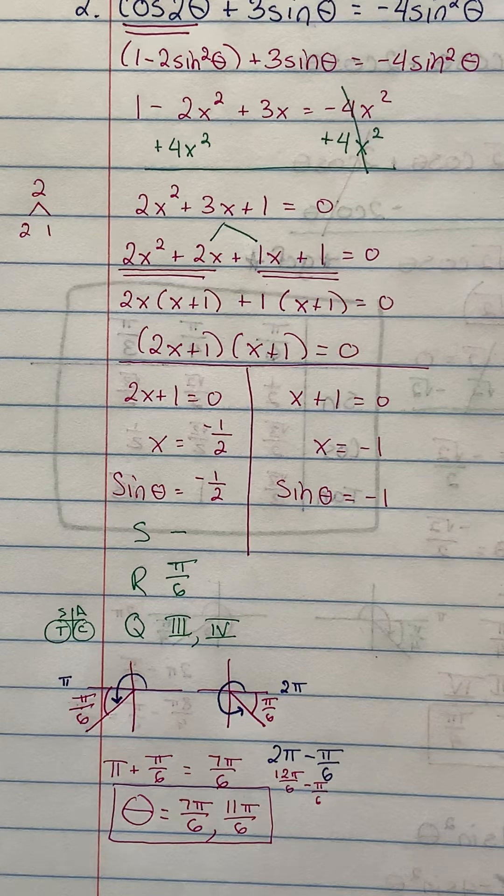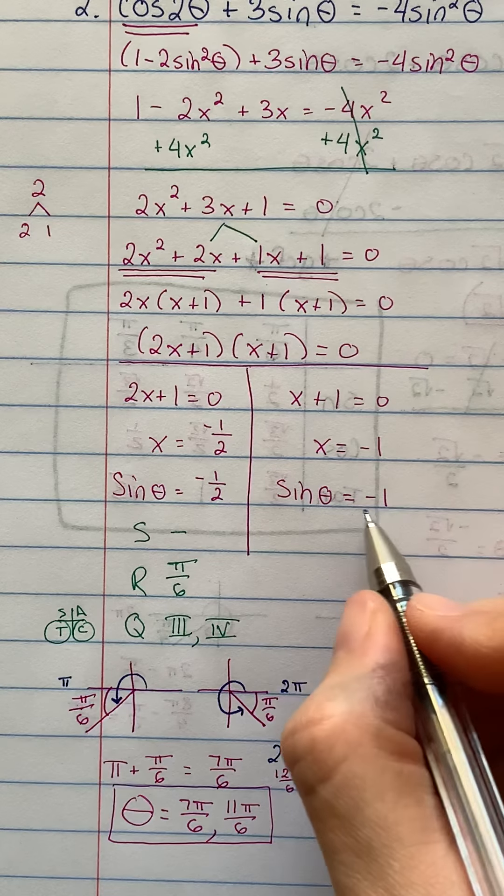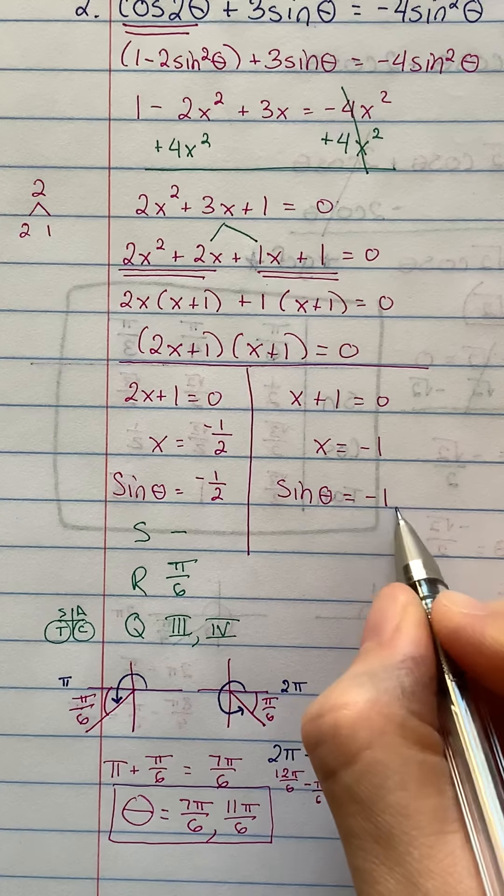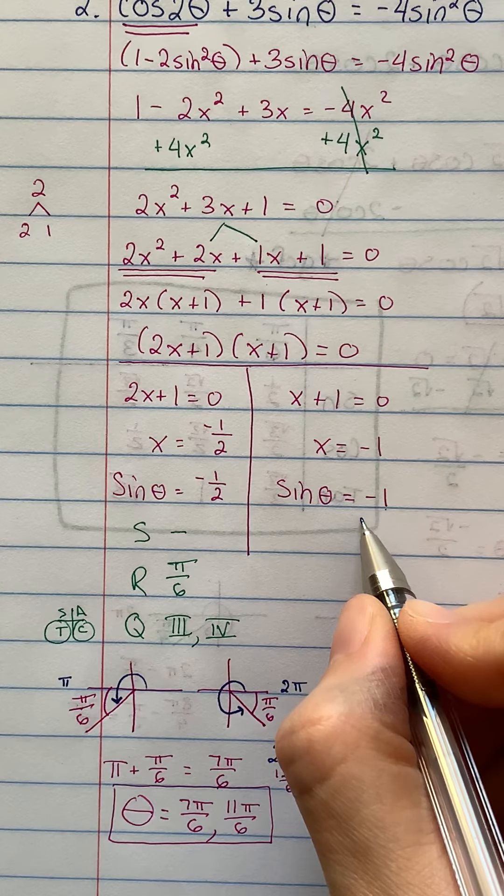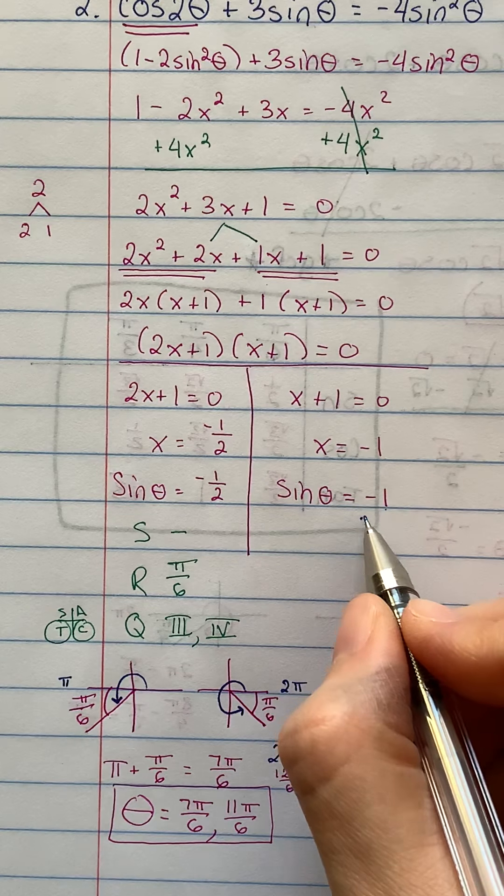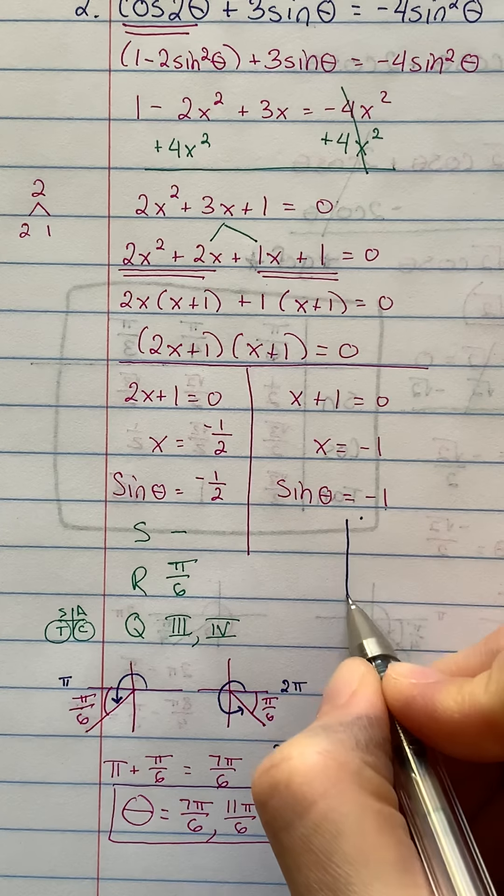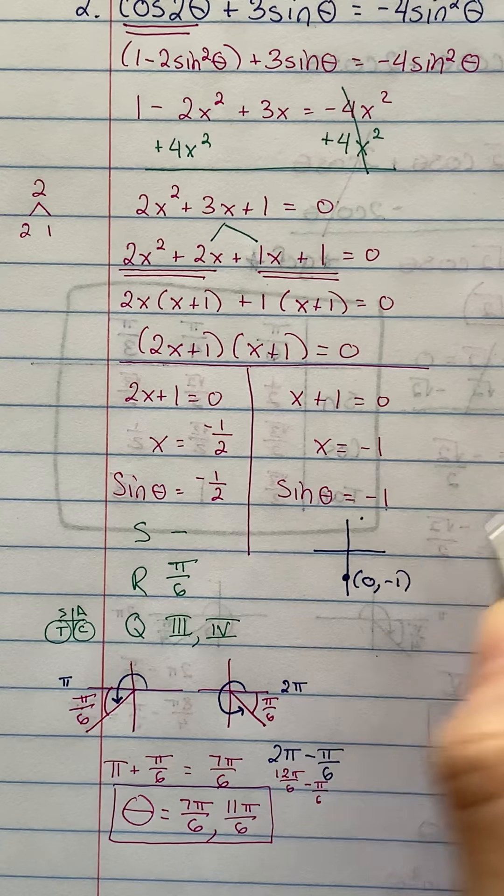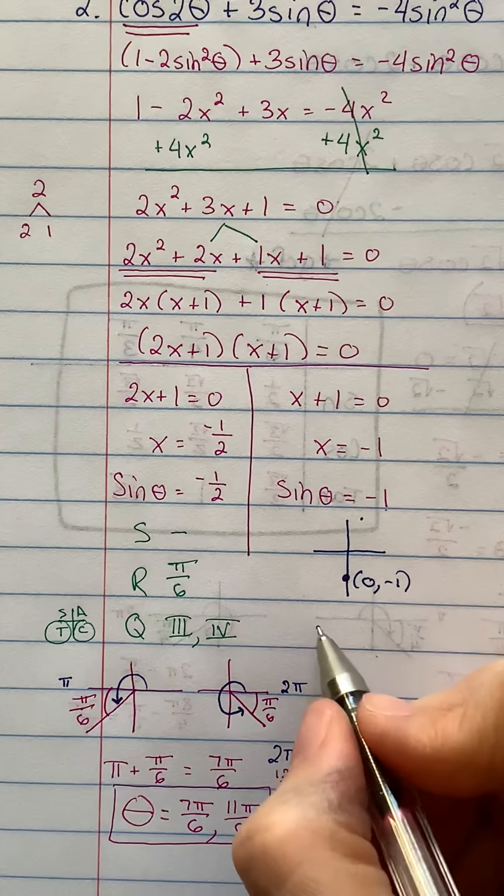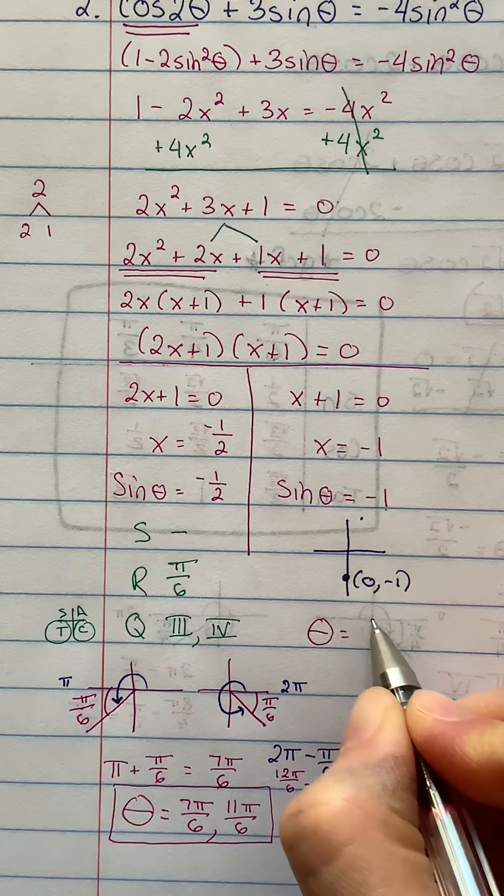And then I still have some answers over here. Sine is negative 1. That is signaling to me to use the unit circle. Negative 1 is not in that chart that we had recreated. This is on the unit circle. So I'm looking for where is sine negative 1. Sine is really y. So I'm looking for on the unit circle where is y equal to negative 1. That's this point right down here, 0 comma negative 1. So the final answer on this side would be 3π over 2.